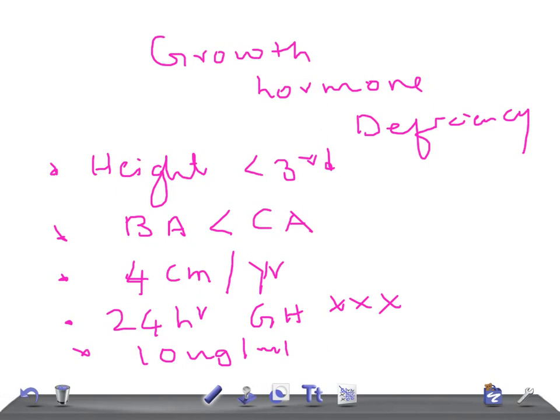For this test, you allow the patient to do exercise, like running continuously for 20 minutes, and then measure the growth hormone levels. If it's less than 10 nanograms per ml, that is considered growth hormone deficiency.